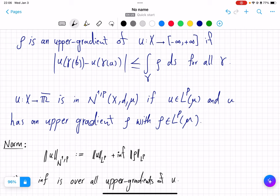If along every rectifiable curve γ, the integral of the Borel function over γ, which is well defined, is bigger than the difference of the u values at the two ends of the curve.